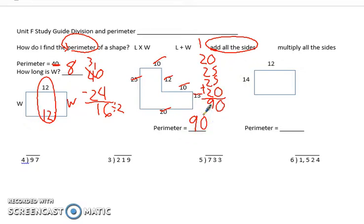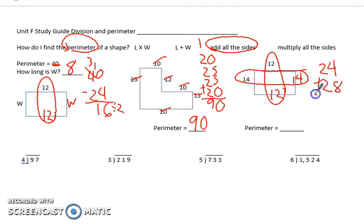Over here, again, I'm looking for the perimeter, and I've given you two of the sides. So make sure you write the other two sides in. And then I'm just going to add 12 plus 12 is 24, 14 plus 14 is 28. I add them together, and I'm at a perimeter of 52.